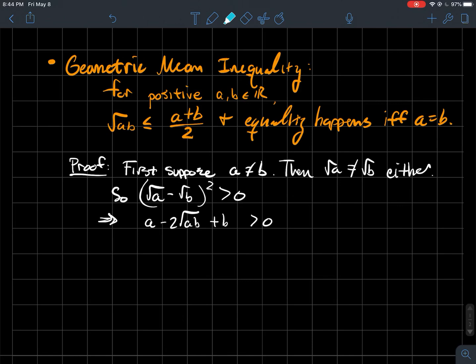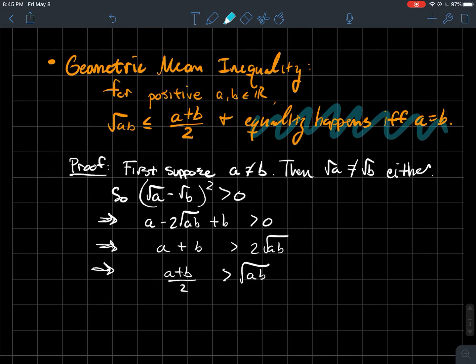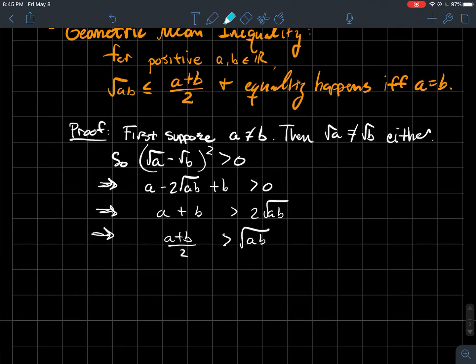And then now we will just add this over to the other side and divide by two. And then we've got our geometric mean inequality. So it's definitely true when A and B are not the same number. So what do we need to do? We need to show that equality happens if and only if A is equal to B. So let's do that.